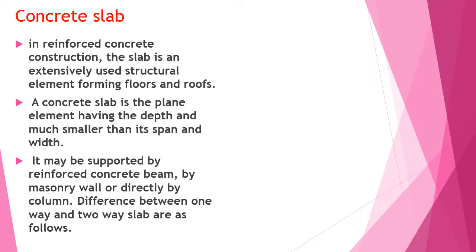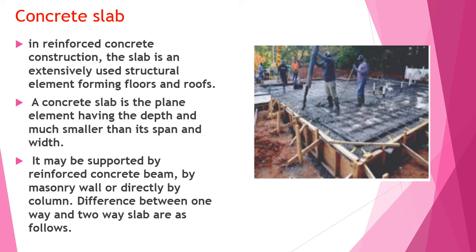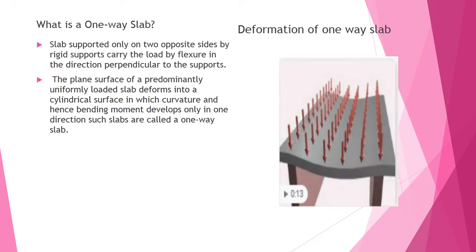The differences between one-way and two-way slabs are as follows. What is a one-way slab? Slabs supported only on two opposite sides by rigid supports carry the load by bending in the direction perpendicular to the support. The plain surface of a predominantly uniformly loaded slab deforms into a cylindrical surface in which curvature and hence bending moment develops only in one direction. Such a slab is called a one-way slab.